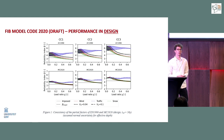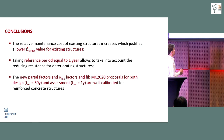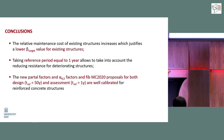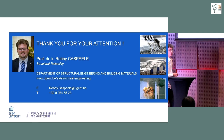In conclusion: when assessing an existing structure, a lower target beta value is appropriate due to higher intervention costs. For degrading structures, a one-year reference period must be used instead of 50 years. All of this can be implemented using the new partial factor method in Model Code 2020, which has been validated for reinforced concrete structures subjected to bending.